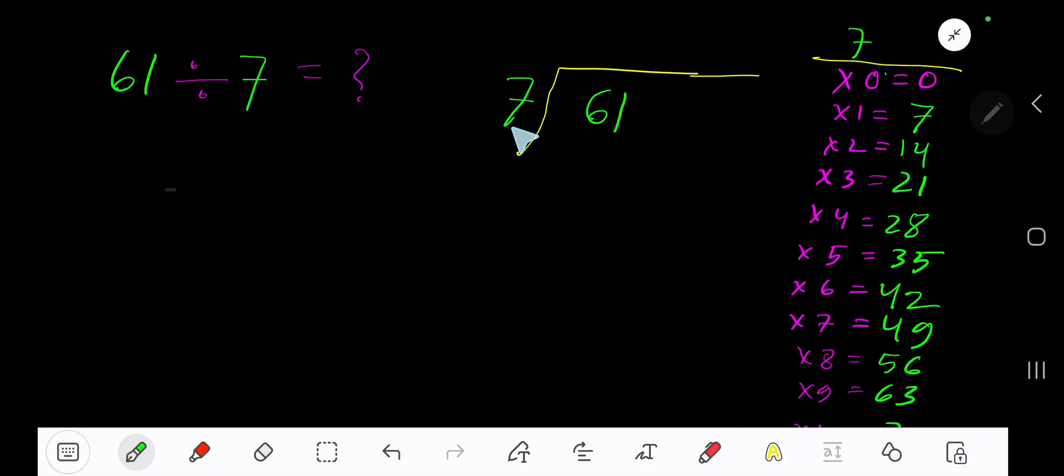61 divided by 7. Here 7 is a divisor, so you need the multiplication table of 7. 7 times 0 is 0, 7 times 1 is 7, 7 times 2 is 14, 7 times 3 is 21, 7 times 4 is 28. To find the multiplication table of 7, just add 7 with the previous step: 0 plus 7 is 7, 7 plus 7 is 14, 14 plus 7 is 21, 21 plus 7 is 28.